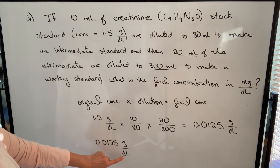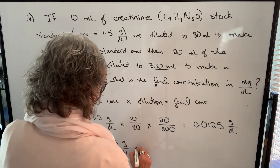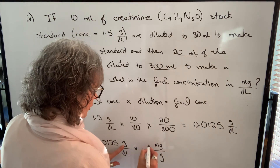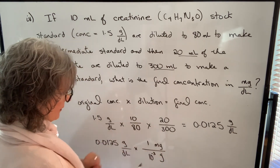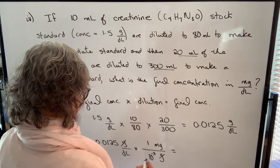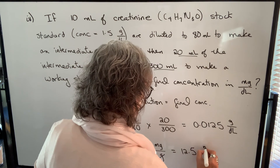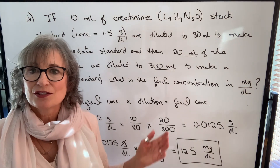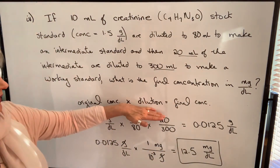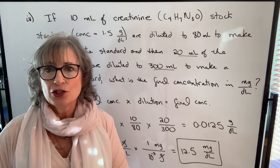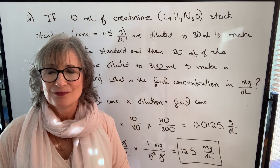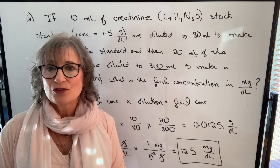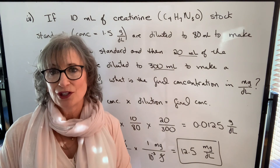I'll often take this dilution factor shortcut, but if you're not comfortable with it, you can use the changing concentration formula — just remember you'll need to do two sets of calculations. The key in doing these problems is getting your units correct, knowing which concentration goes with which volume, and knowing how to change from one concentration unit to another using dimensional analysis.